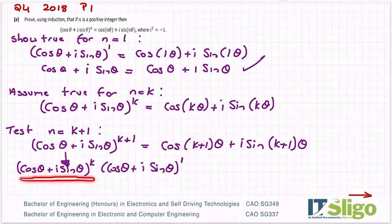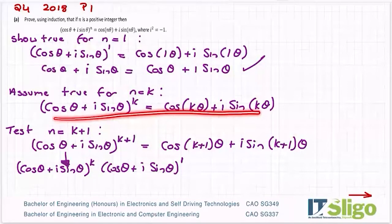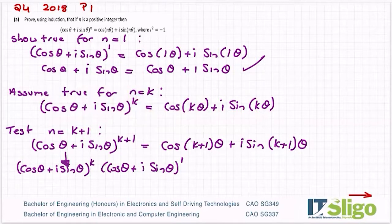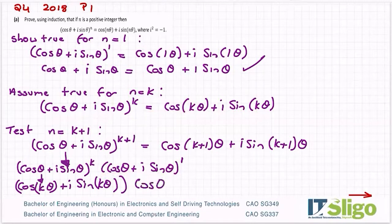So then for this one, let's use what we have up here. If we're assuming this is true, then I can write this one here as cos k theta plus i sine k theta. And then of course this one here to the power of 1 is just itself cos theta plus i sine theta.